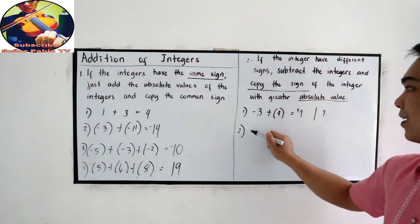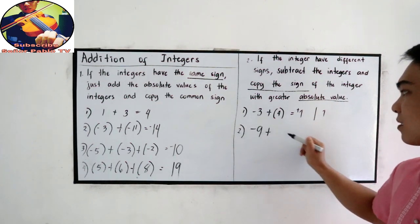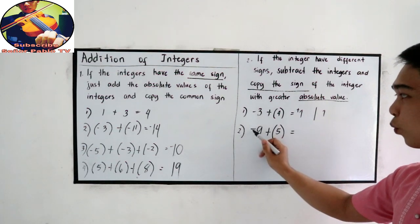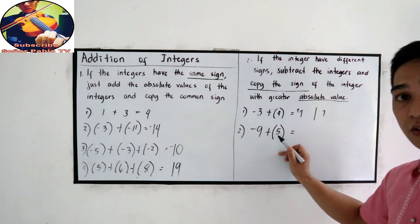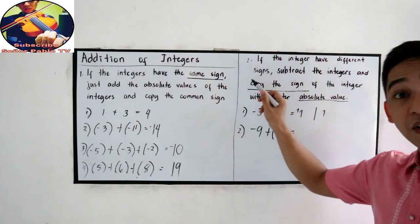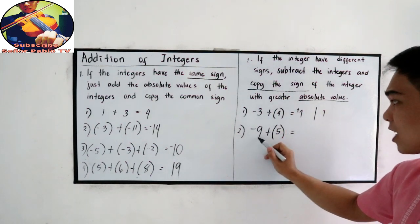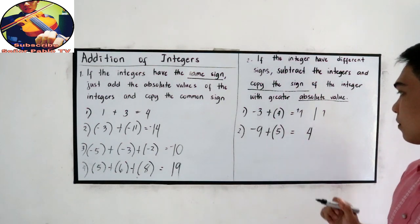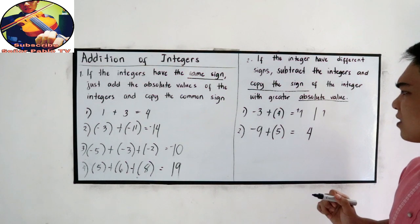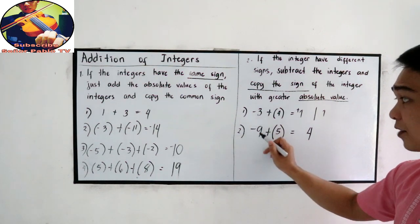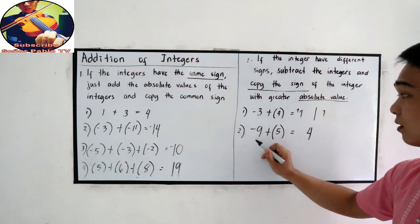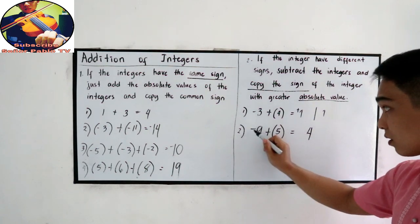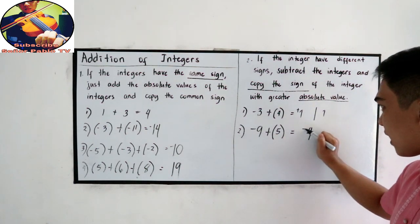Number two: negative nine plus five. One is negative and the other is positive — different signs. So subtract: nine minus five is four. What is the sign? The absolute value of negative nine is nine. Nine is greater than five, and the sign of nine is negative. So we write negative four.